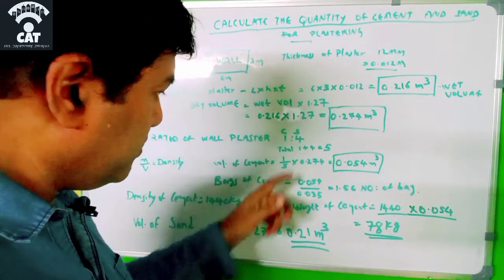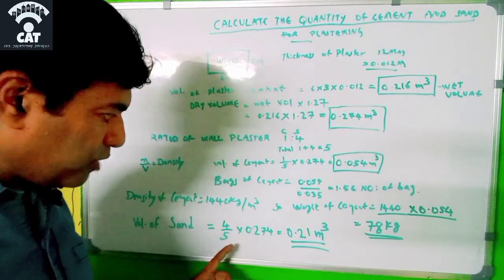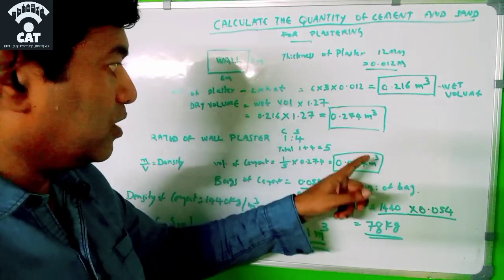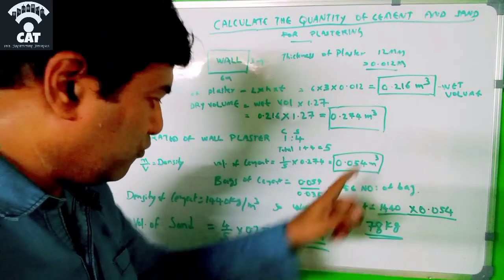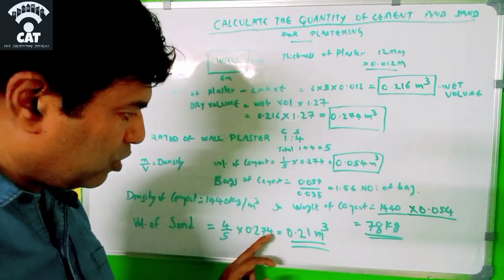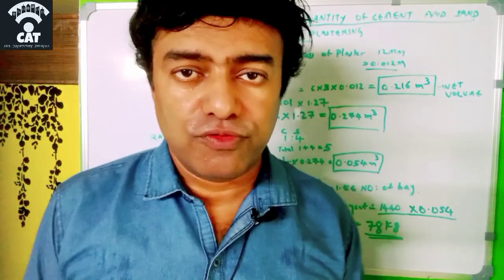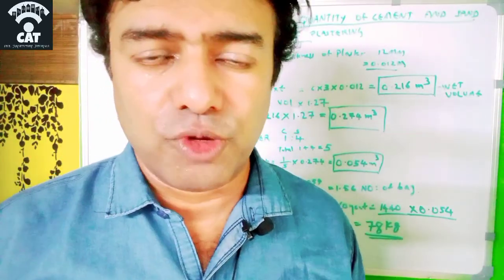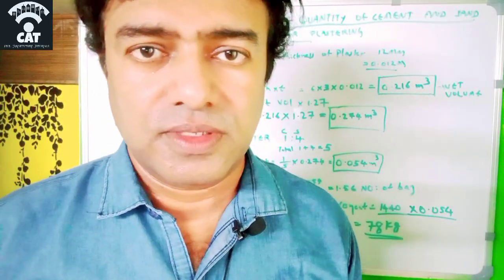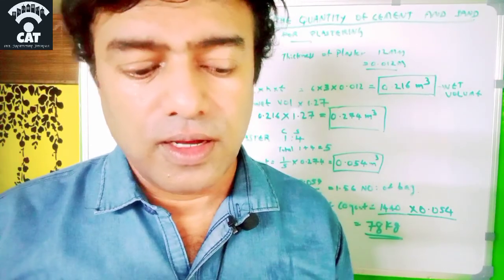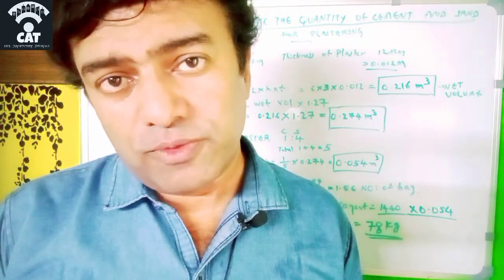Volume of sand is 4/5 × total dry volume = 4/5 × 0.274 = 0.21 cubic meters of sand. So now we got the volume of the wall plaster.